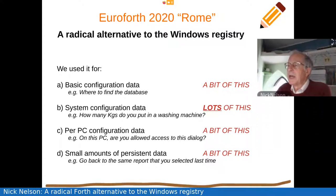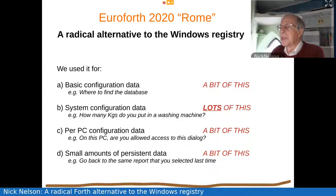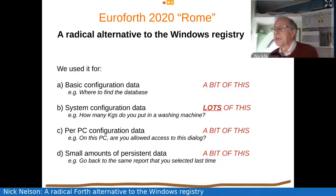So we started looking at what we'd used the Windows registry for and divided it into four classifications. First was basic configuration data — for example, the program needs to know where to find the database, and that's actually quite a small amount of information. Second is system configuration data, and that is a huge amount of information. What we're doing here is automating large commercial laundries, and every installation is different. There's an enormous amount of information you have to put in to configure the system — for example, how many kilos you put into a washing machine.